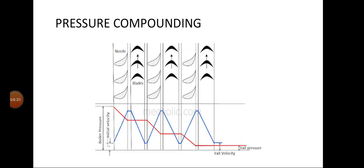In pressure compounding, it consists of a set of nozzles followed by a set of moving plates, then again a set of nozzles, moving plate, nozzle, moving plate — multiple stages of blades are mounted. The steam flows from left to right: it enters the nozzle, then the moving plate, then the nozzle again, then a set of moving plates. The velocity increases in the nozzle and decreases in the moving plate — this repeats continuously. The pressure drops in the nozzle and remains constant in the moving plate, and this cycle repeats at every stage of blades.